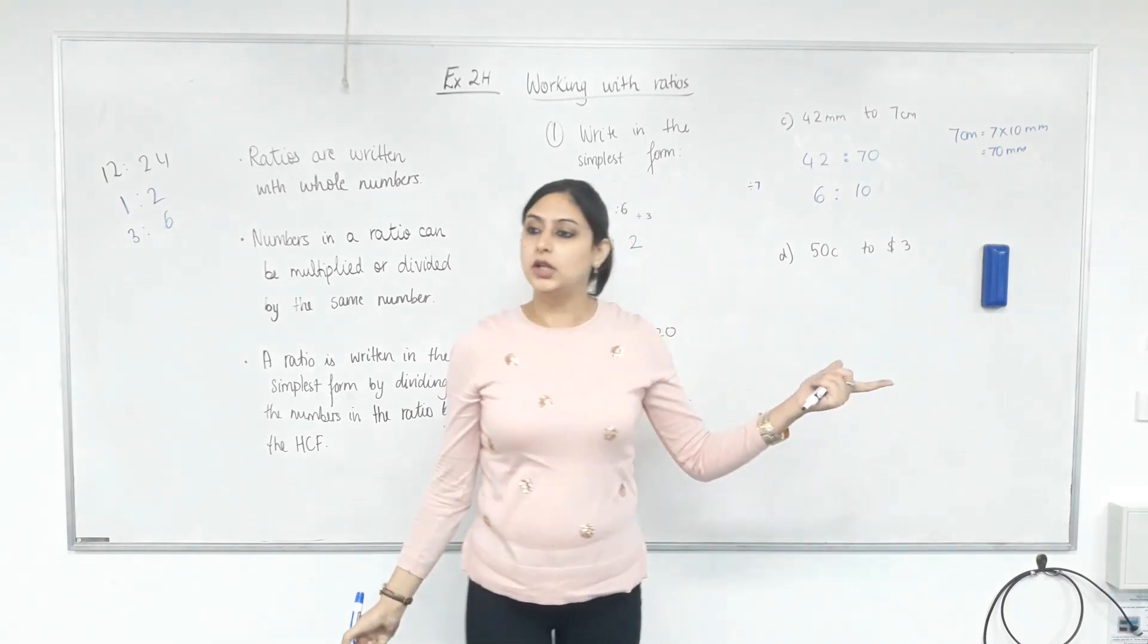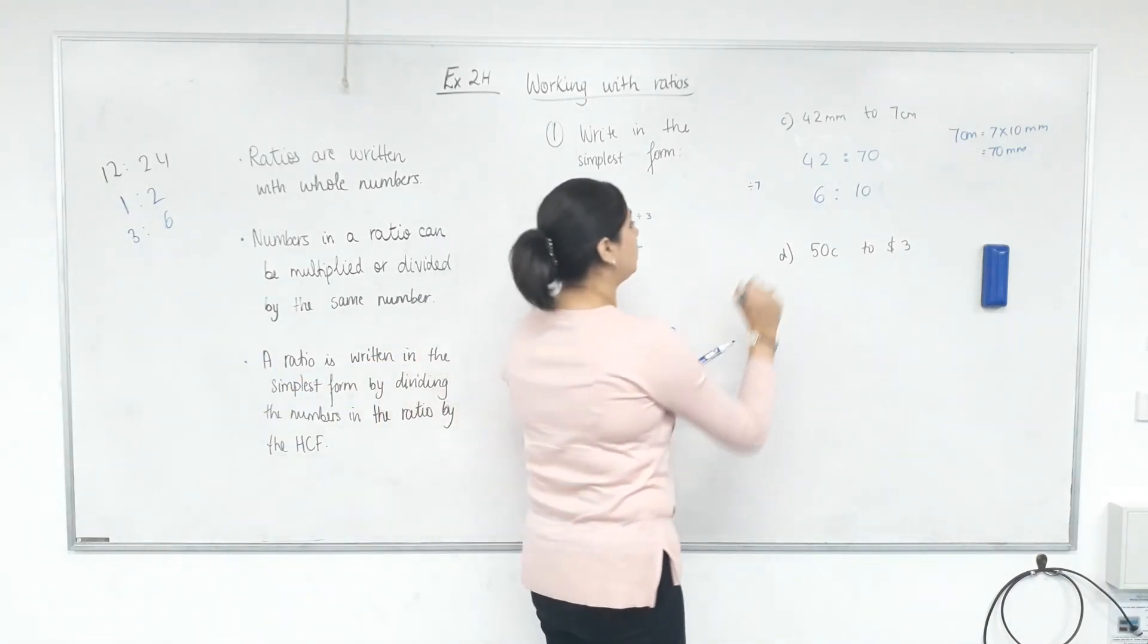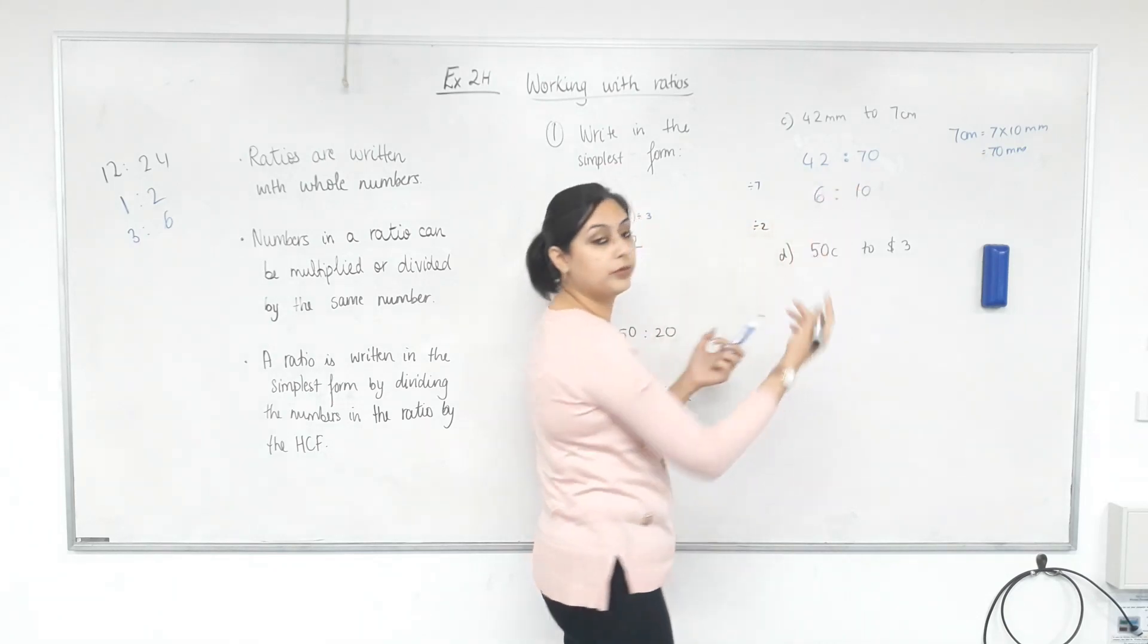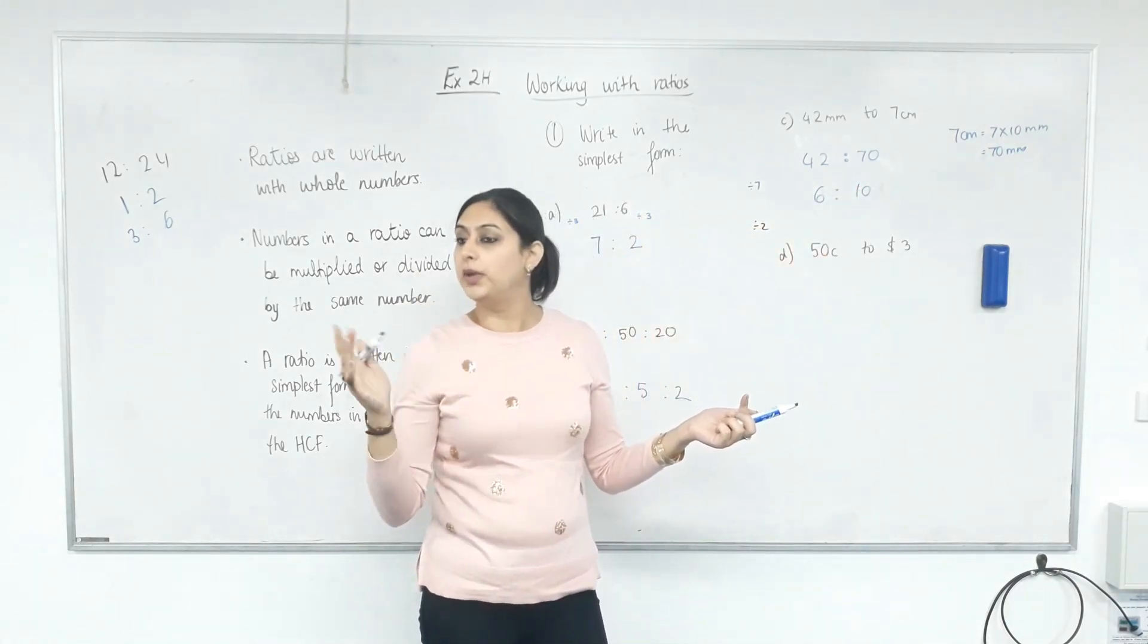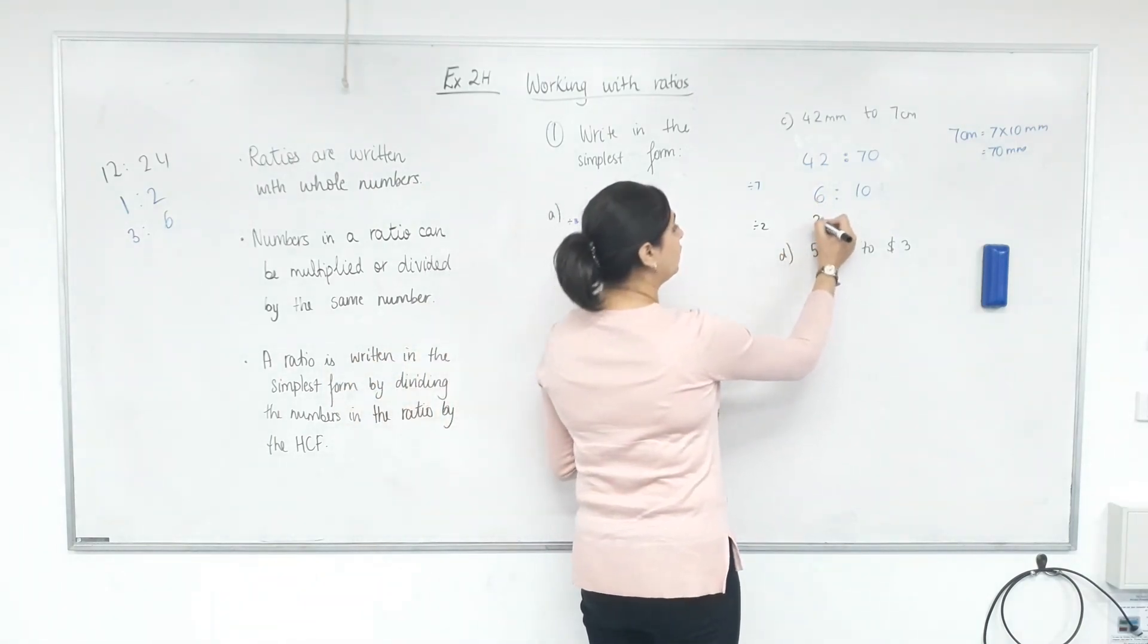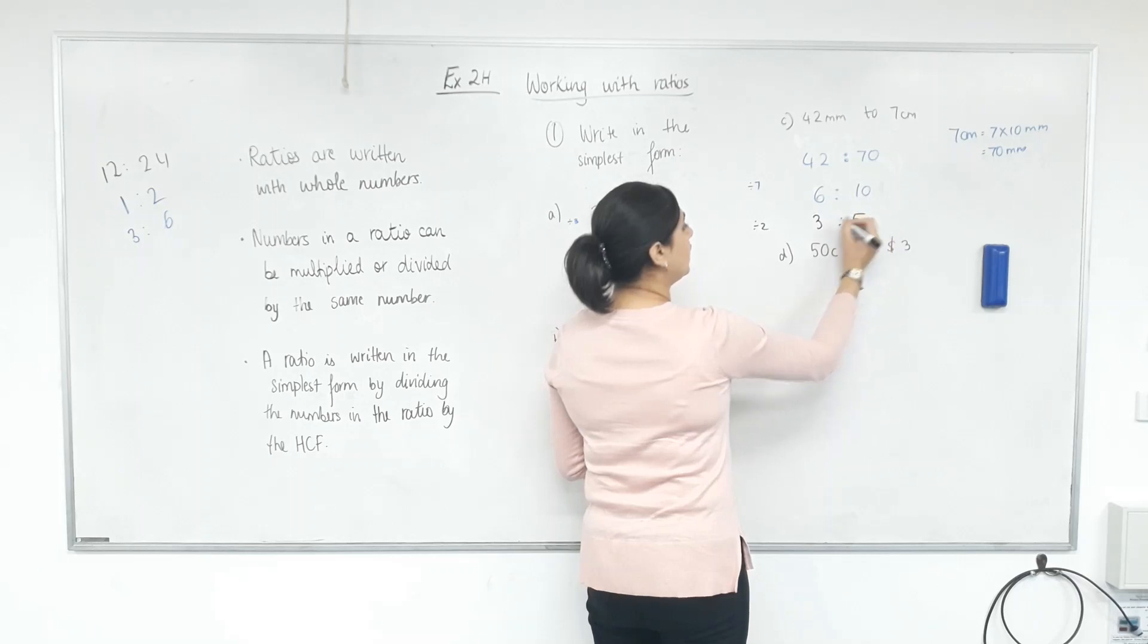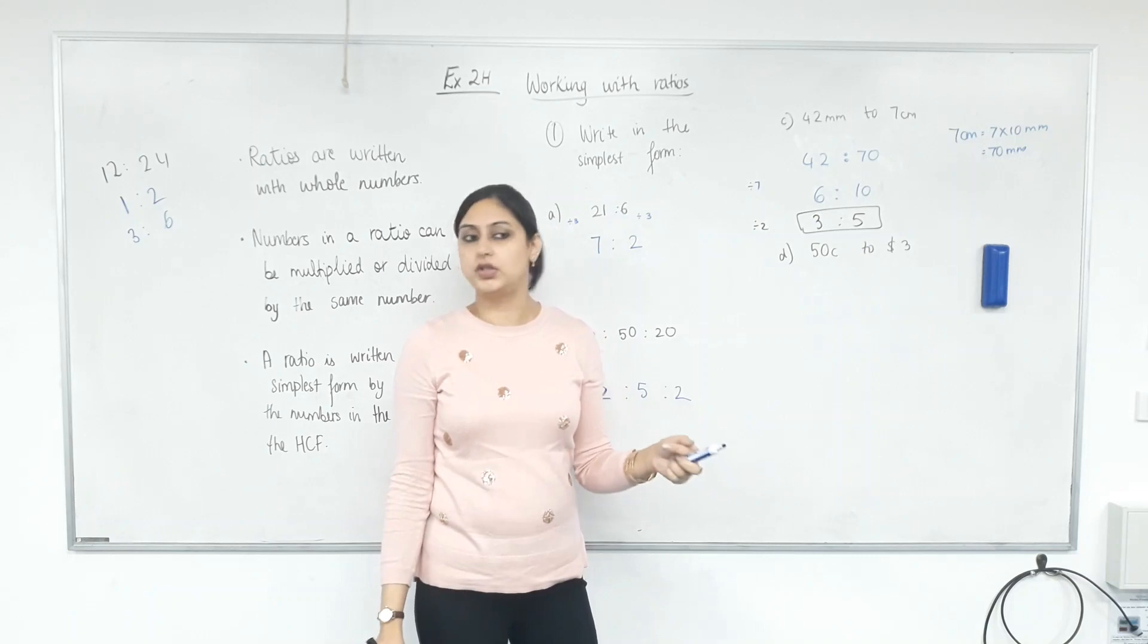Oh. Still not fully simplified. 2. Yep. Divide both sides by 2. Or we could have divided both of them by 14. But it's okay. We don't need to know the big numbers straight away. We can do it in steps. 6 divided by 3? 3. 10 divided by 2? 1. So this is your final answer. All others are equivalent ratios.